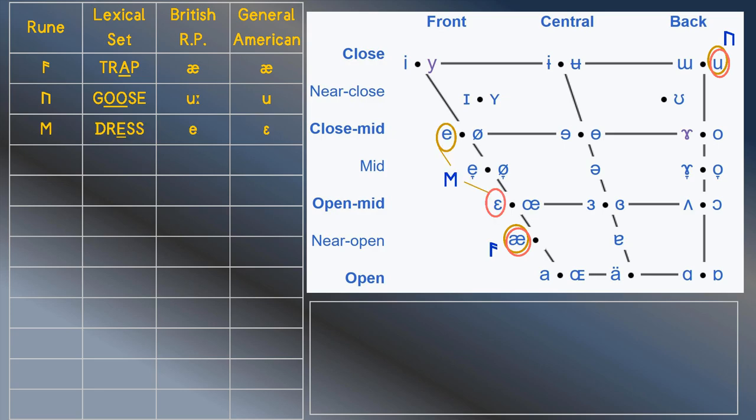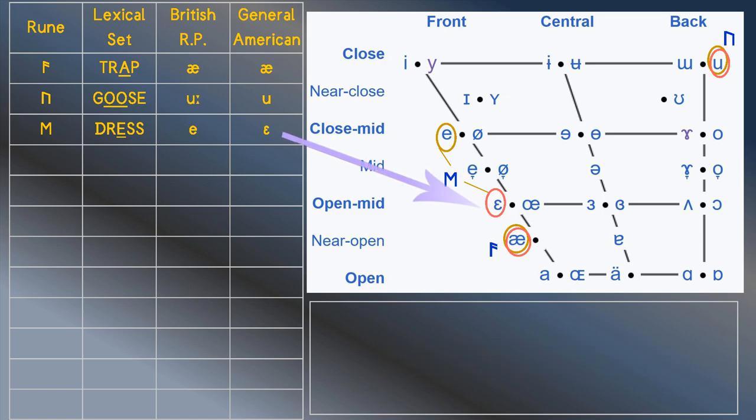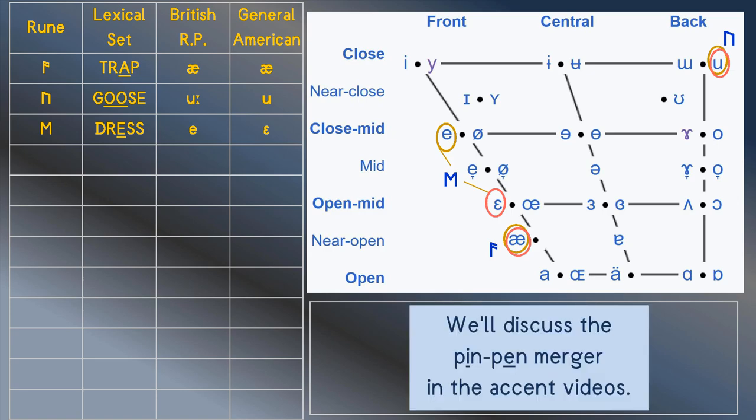For the dress vowel, there's some difference but, if you remember, the rune historically slid from an open mid vowel in Proto-Germanic to a closed mid vowel in Old English. Seeing its sound slide back isn't too much of a surprise. As practically everyone recognizes these sounds without a problem, I think we can keep E for the dress vowel.